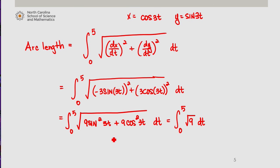Recalling what our Pythagorean identity is, sine squared of theta plus cosine squared of theta is 1. So this is the integral from 0 to 5 of 3 dt.